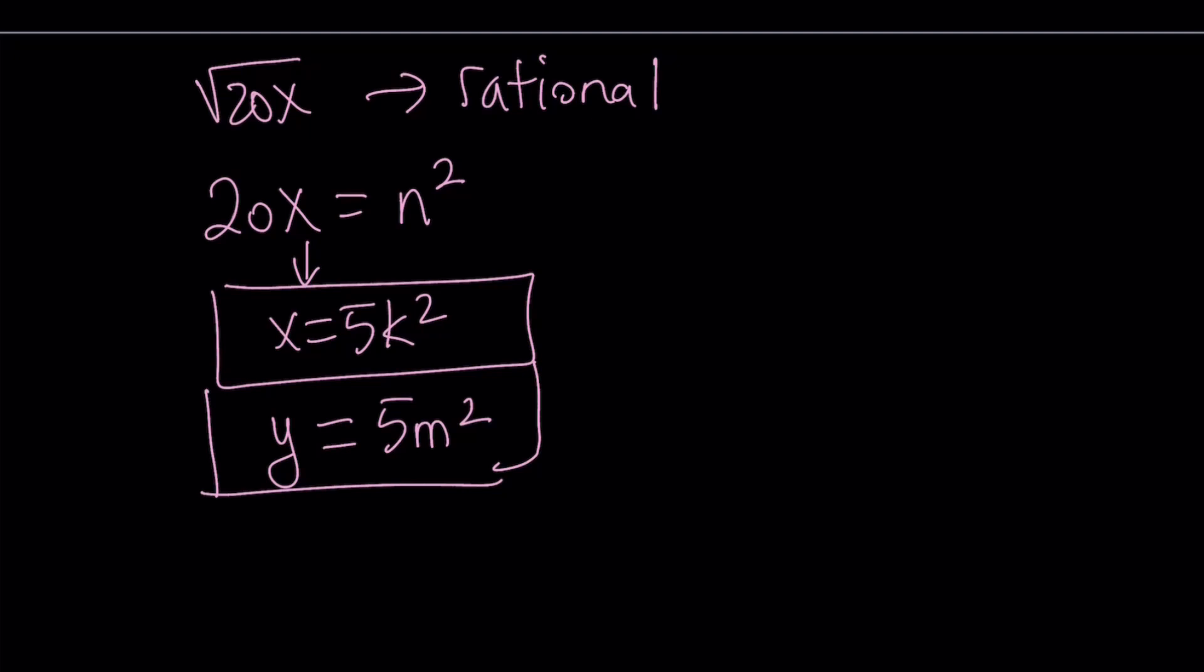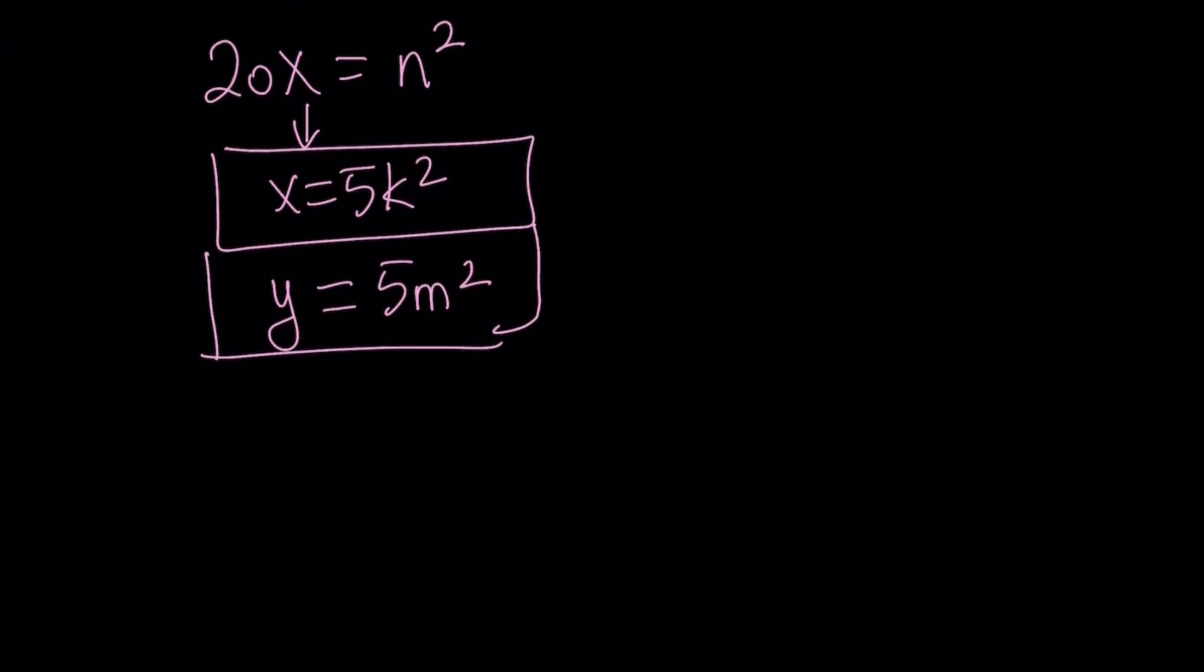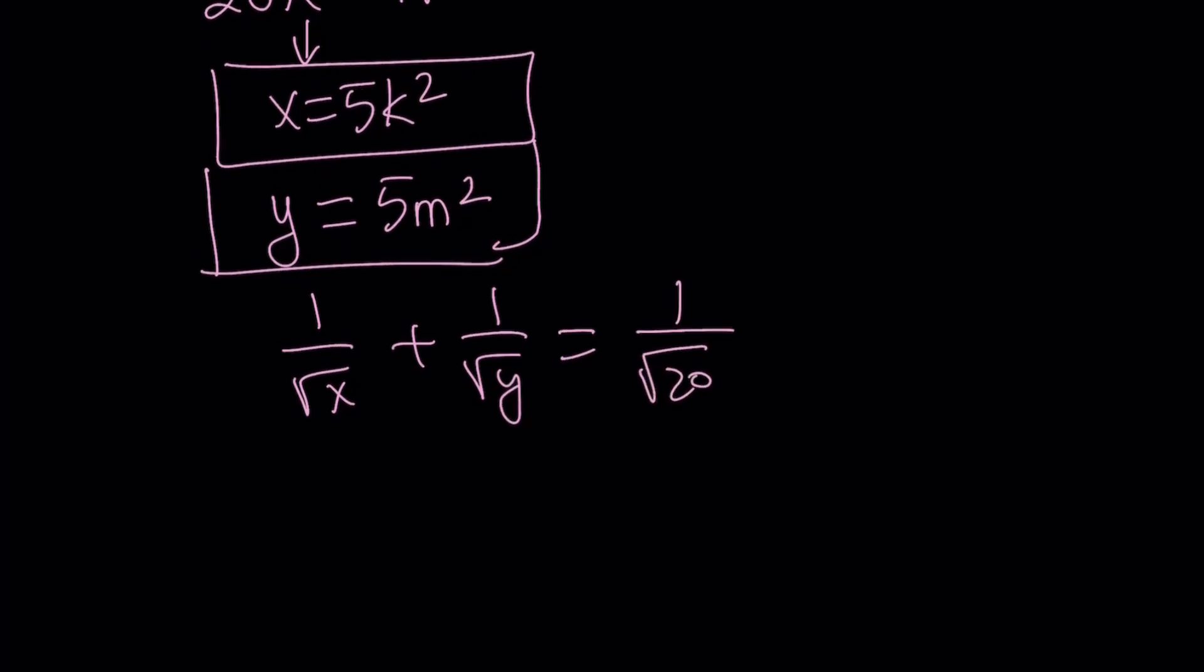Now, since we know that x and y can be written like this, let's plug these into the original equation, which was 1 over square root of x plus 1 over square root of y equals 1 over square root of 20. If you replace x with 5k squared, obviously you can choose k and m to be positive. When you square root it, if k is positive and m is positive, then you're going to get 1 over k root of 5 plus 1 over m root of 5 equals 1 over square root of 20.